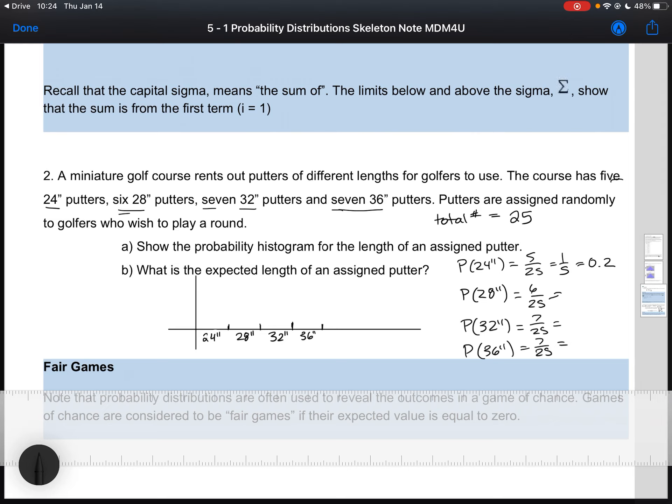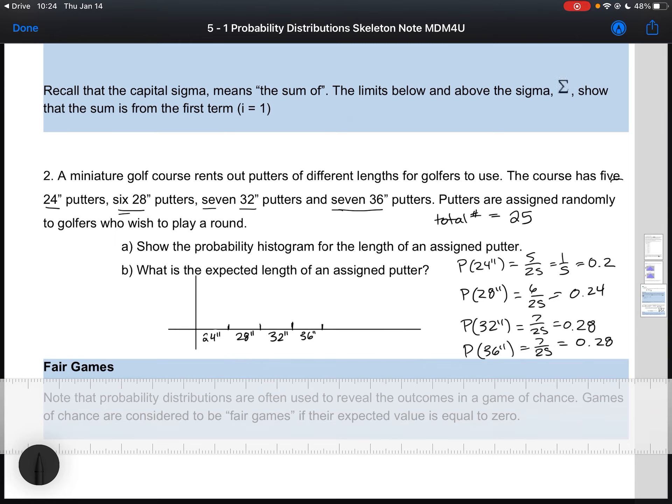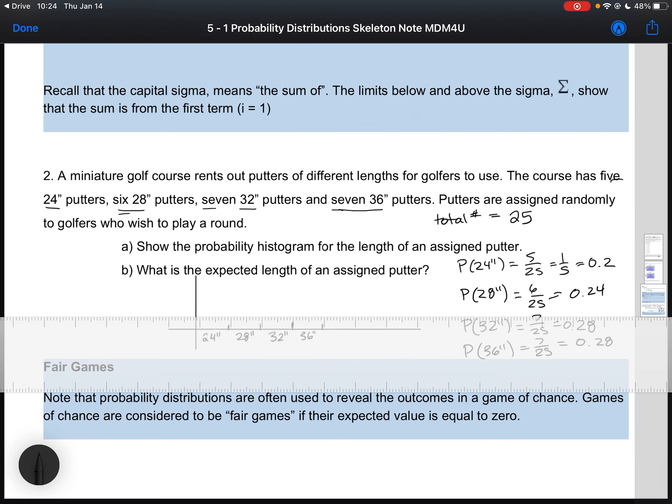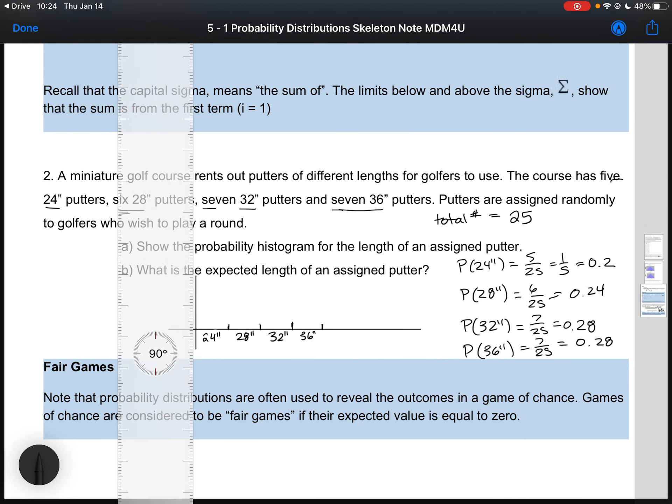If I change those into decimals, I've got 0.28, 0.28, and finally 0.24. So I'm going to put some ticks on my scale here. Let's go up this way. I'm going to start with 0.1, 0.2, 0.3.